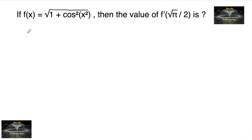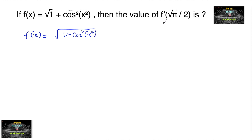If f(x) is equal to √(1 + cos²(x²)), find the value of f'(√(π/2)). Differentiating with respect to x, we'll find f'(x).